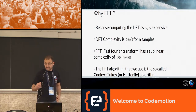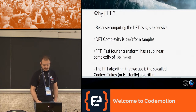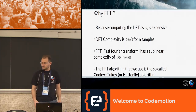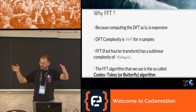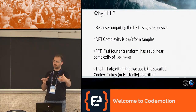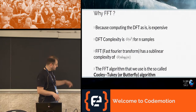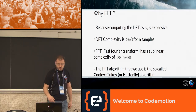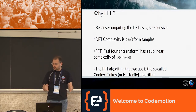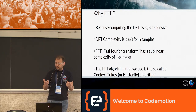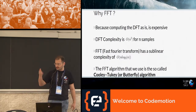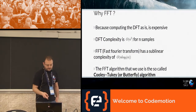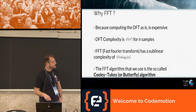Why do we want to use FFT? Computing the DFT is very expensive — it has complexity of N squared for N samples, and if those samples are on a grid it's even worse. FFT has been proven to have a sub-linear complexity of N log₂ N, because it splits the N samples recursively in half, generating a binary tree. The algorithm we are going to use is the so-called Cooley-Tukey or butterfly algorithm.